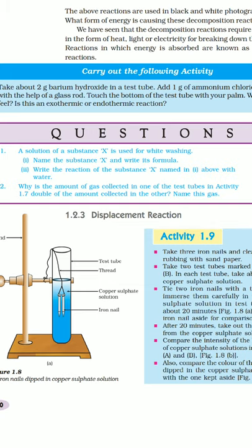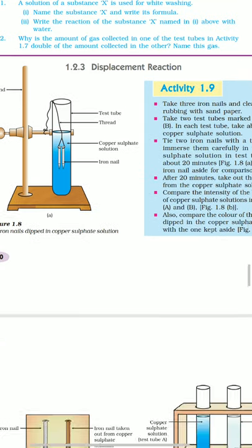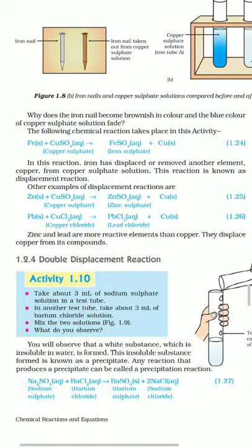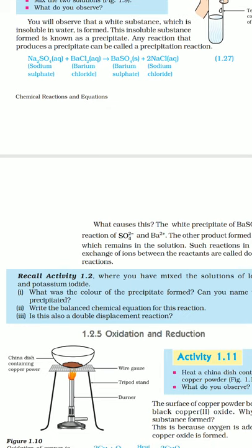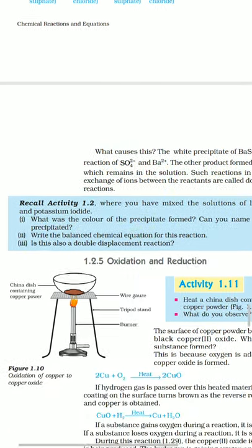When you mix solutions of lead nitrate and potassium iodide, what is the color of the precipitate formed? Name the compound involved. The precipitate is yellow in color. The compound is lead iodide with chemical formula PbI2. Write the balanced chemical equation for the reaction. Pb(NO3)2 aqueous plus 2KI gives PbI2 solid plus 2KNO3 aqueous. What type of reaction? This is a double displacement reaction.